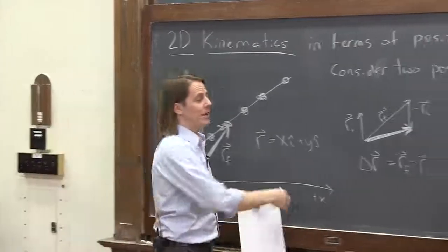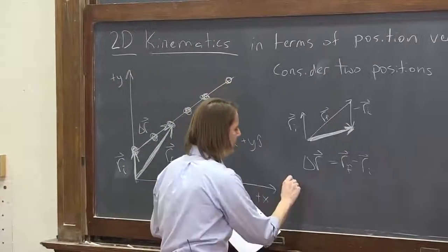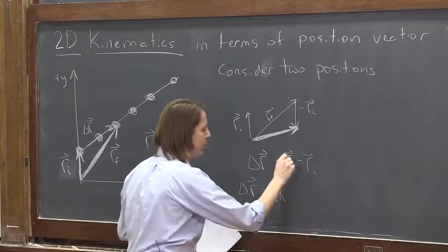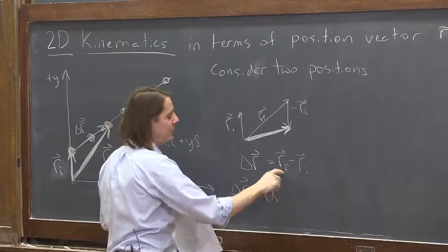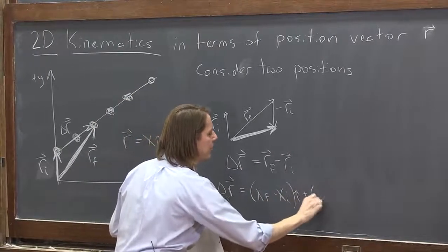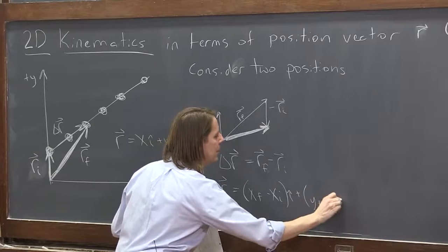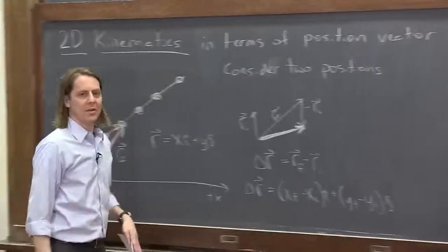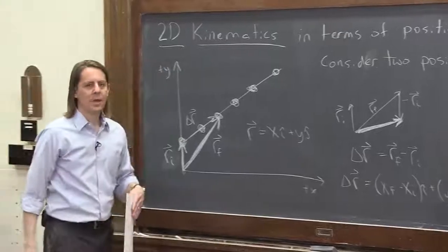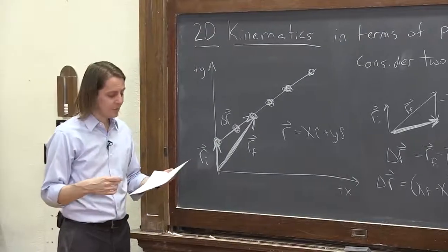If you wanted to, you could write it out in all of its components. You could write this as x final minus x initial i hat plus y final minus y initial j hat. Just like the position vector is just x i hat and y j hat. It's just a more compact way to write things.